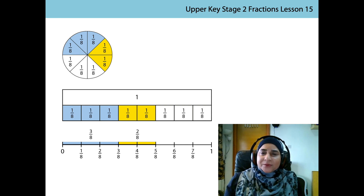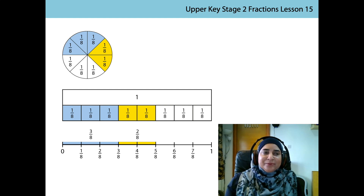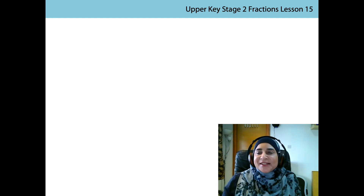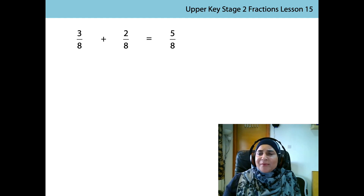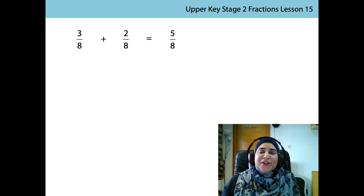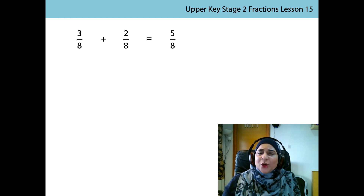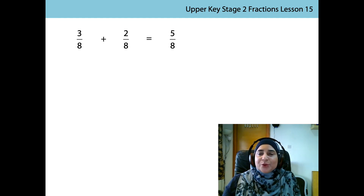What equation or number sentence could we write to represent the story of the apple? The three eighths represents how much of the apple I ate. The two eighths represents how much of the apple my sister ate. The five eighths represents how much of the apple we ate all together.